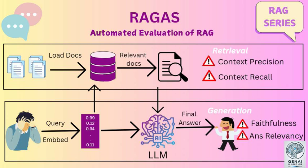Think about fields like scientific research or journalism, where staying up-to-date on the latest findings is crucial. RGAS could help ensure that AI systems in these fields are using the most relevant and accurate information, leading to more informed decisions and breakthroughs. But no technology is perfect — what are some of the limitations or challenges that researchers still need to address with RGAS?